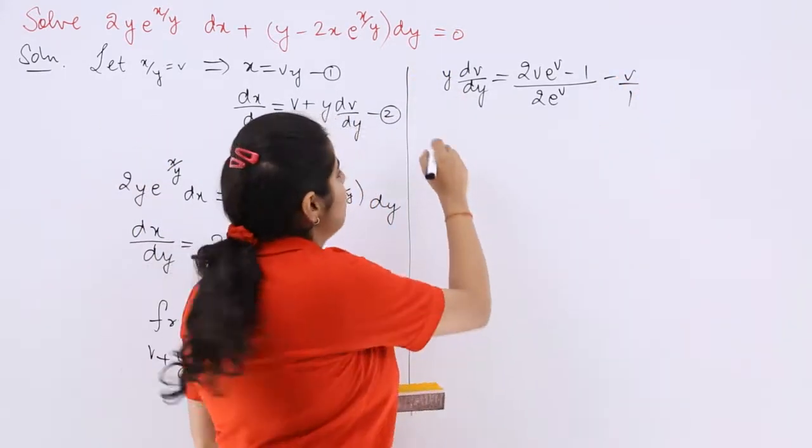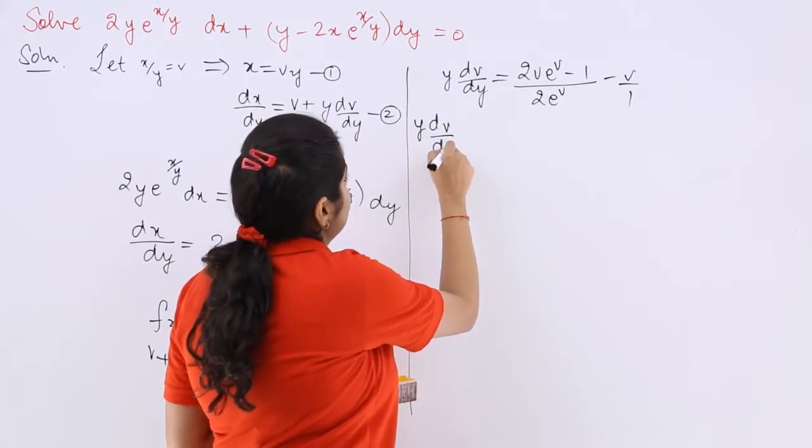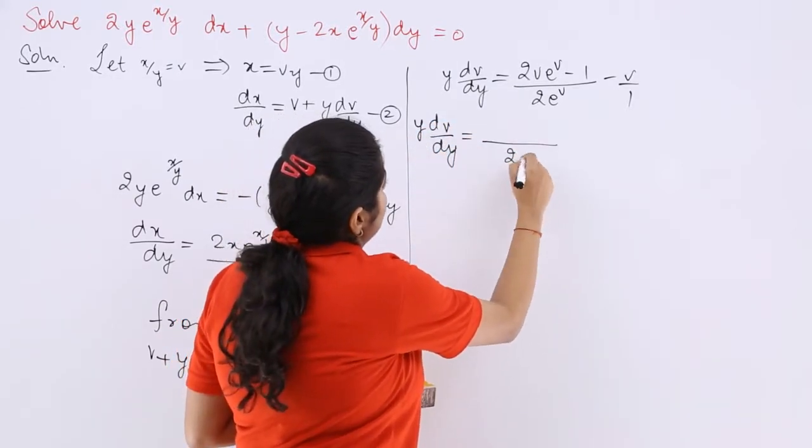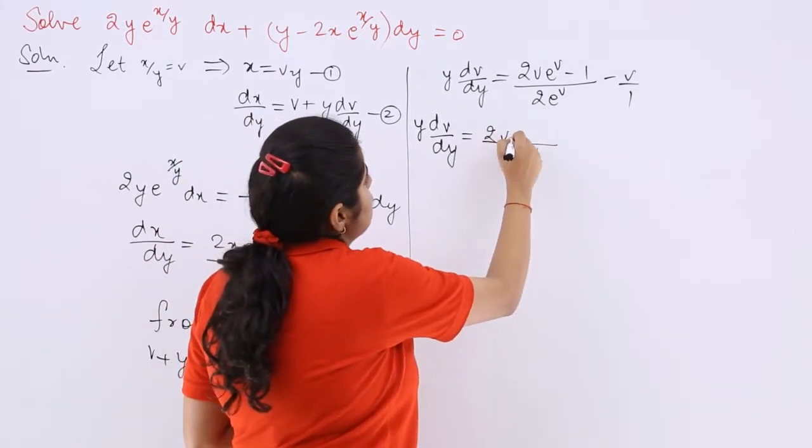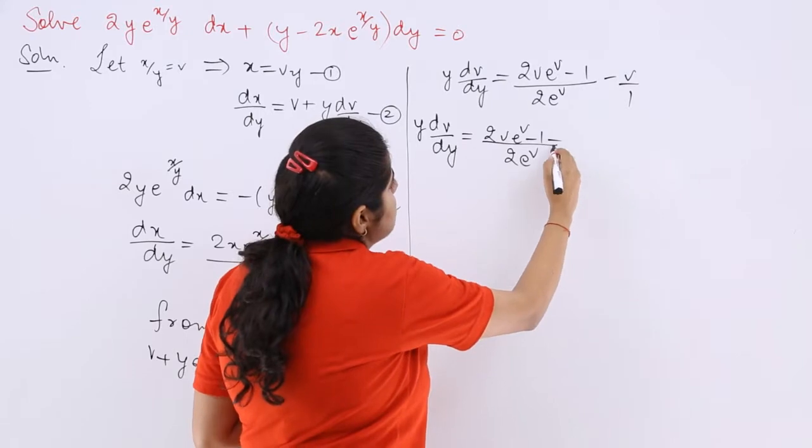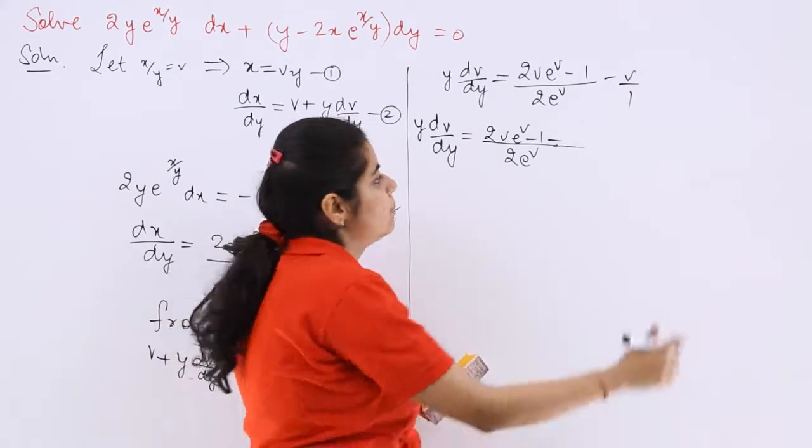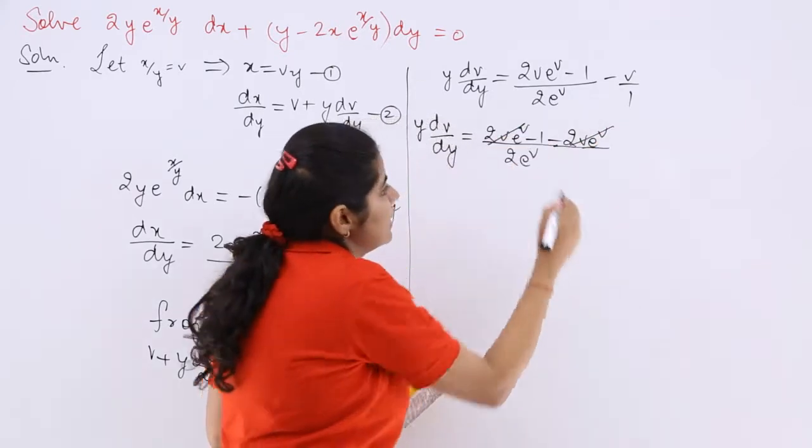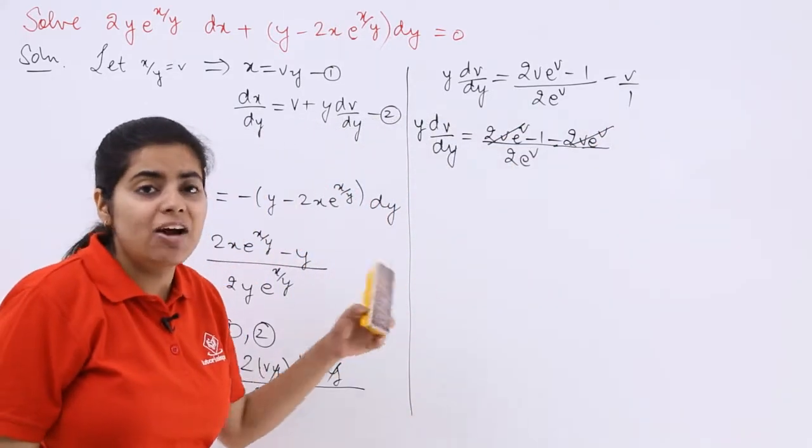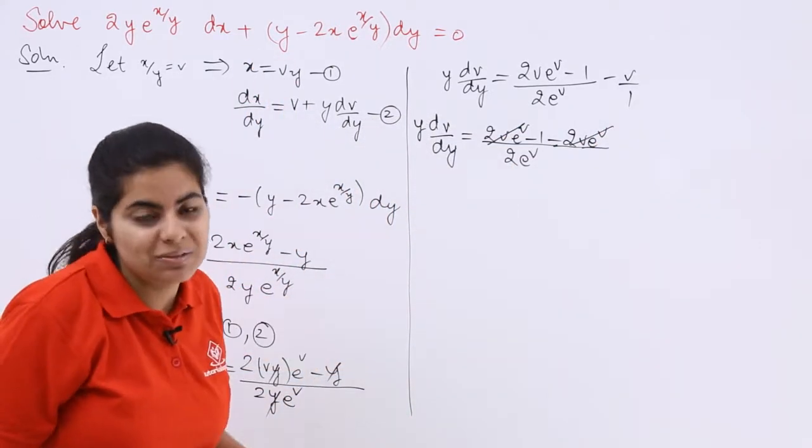Here it becomes y·dv/dy is equal to (2·e^v·2v·e^v - 1 - 2·e^v·2v·e^v) / (2·e^v) and this gets cancelled. So very easily I have made this difficult looking question into a simpler one.